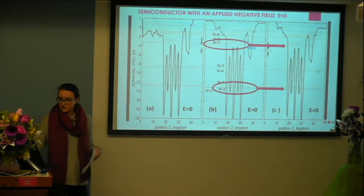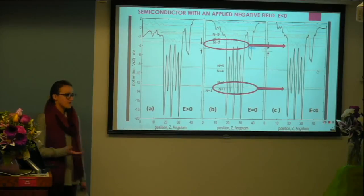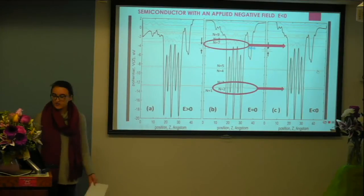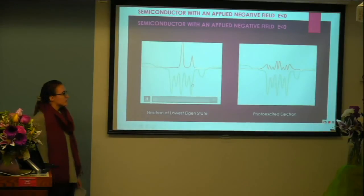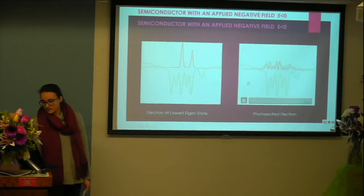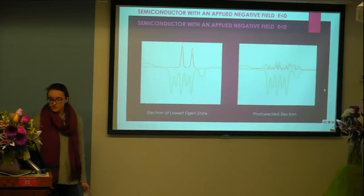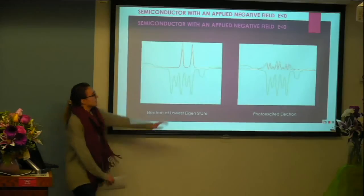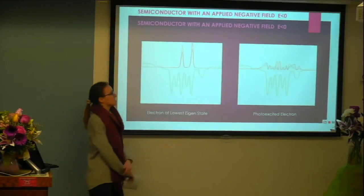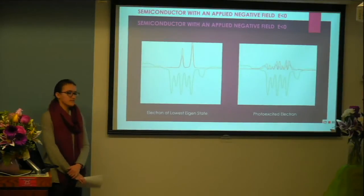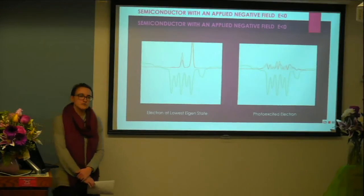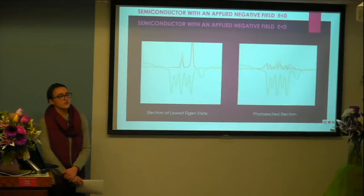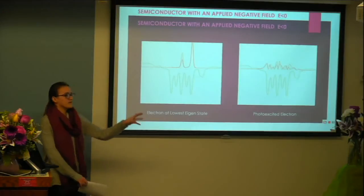Moving on to applying a negative field — again, we start at an initial ground state without exciting the electron, then excite it to a state of about nine. Once again we see almost static electron inside the semiconductor without excitation. As we apply excitation, we notice the movement of the electron. In this case, we actually saw even more motion towards the left side of the semiconductor, which is not our accepting agent. Further research has to be done into why that happens, and it would be interesting to optimize photo-excitation to see the most beneficial state to move the electron into the desired acceptor.